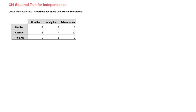Looking at the contingency table here, we can see at the top of each of these columns the different personality styles, and we can see on the far left of each of the rows the different artistic preferences. So let's get started.